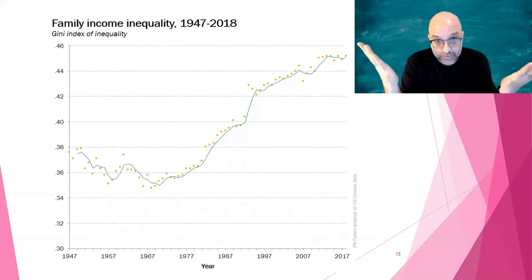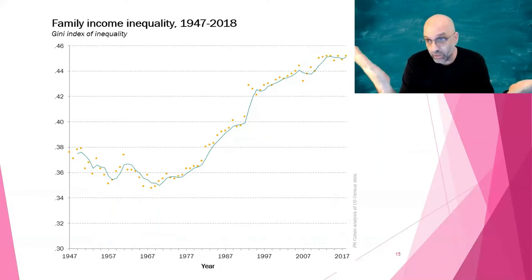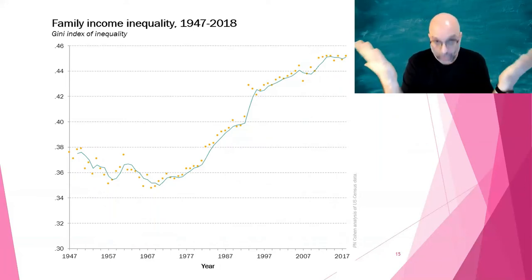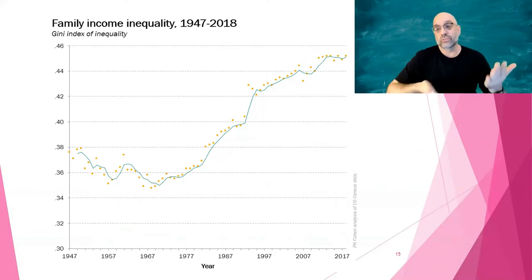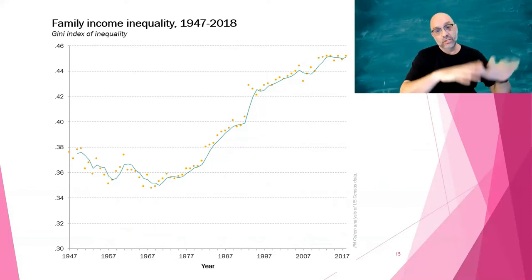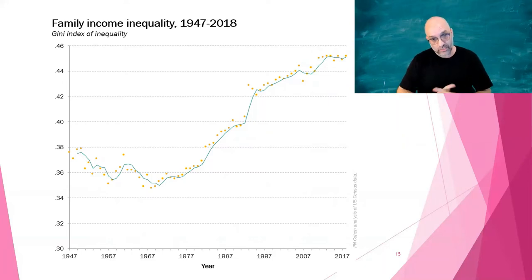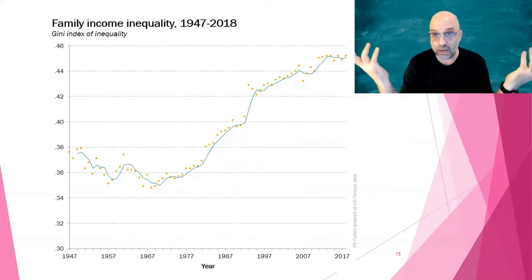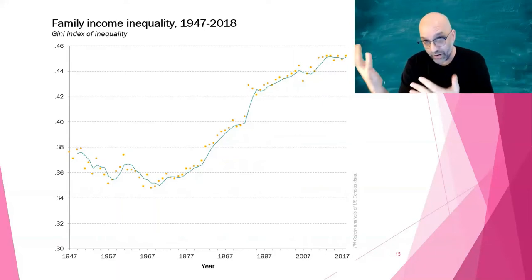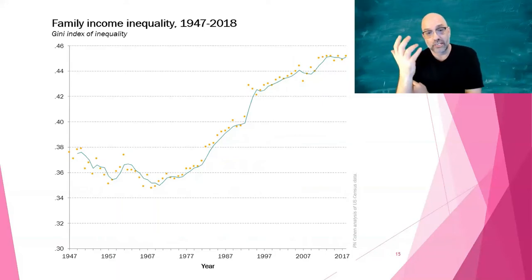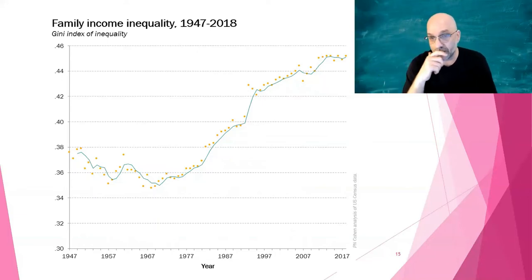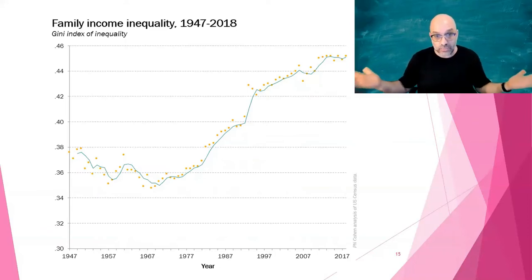The reason we're talking about this is that inequality has been rising in the United States for a few decades. This chart shows Census Bureau data going back to 1947. Inequality was falling until about the end of the 1960s, and has been rising since — quite a bit, from about 35 to about 45 from the early 70s to 2018. This is why we're all concerned about inequality: it really has been increasing, and we can show it with just this one number.